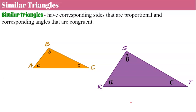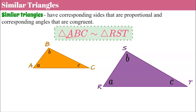Let's begin by reviewing similar triangles. By definition, similar triangles have corresponding sides that are proportional and corresponding angles that are congruent. So we would say that triangle ABC is similar — using this squiggle as a symbol — to triangle RST. We can see that our angles are labeled with the same lowercase letters. Angle A corresponds to angle R and is congruent. Angle B corresponds to angle S and they are congruent. Angle C corresponds to angle T and they are congruent, meaning they have the same angle measure.